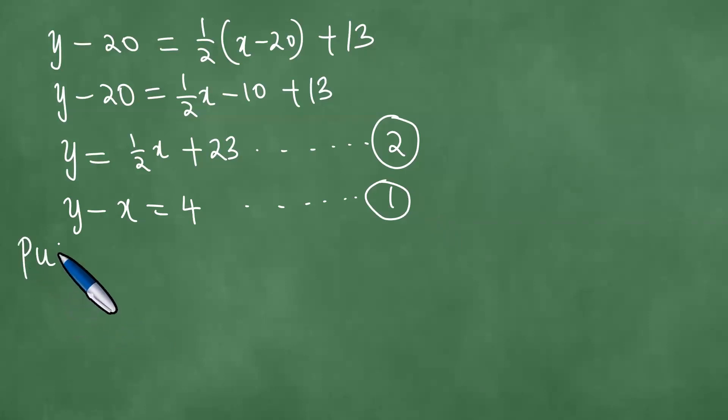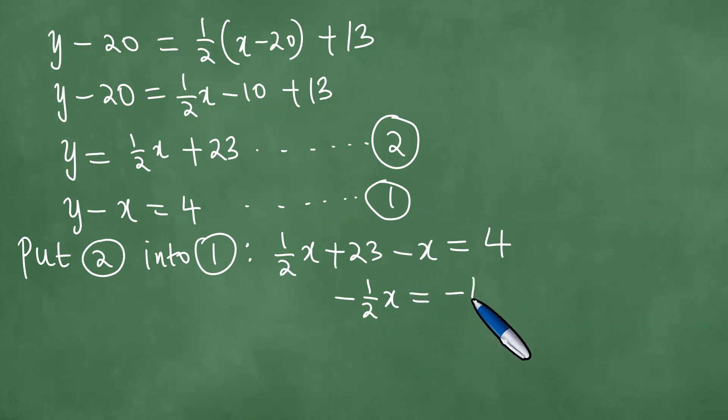Now we put equation two into equation one. We get 1/2X + 23 - X = 4. This gives us -1/2X = -19. Solving for X by multiplying both sides by -2 gives us X = 38.